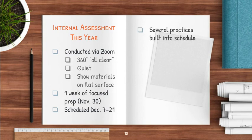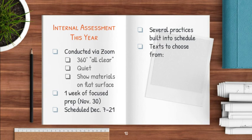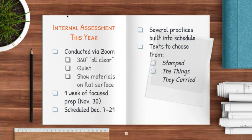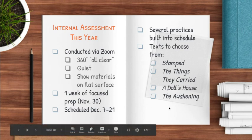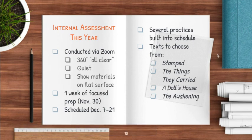There will be several practices before the actual IA, and they're all built into the schedule, so please make sure you look at the syllabus. There's no reason to feel caught unawares or unprepared. The texts you'll be able to choose from for your IA this year are: Stamped by Ibram X. Kendi, The Things They Carried by Tim O'Brien, A Doll's House by Henrik Ibsen, or The Awakening by Kate Chopin. I chose these four because I know the materials and can guide you in your prep, and also because there isn't enough time for me to read all the materials covered with Miss Savini last year and still provide the support you'll need.